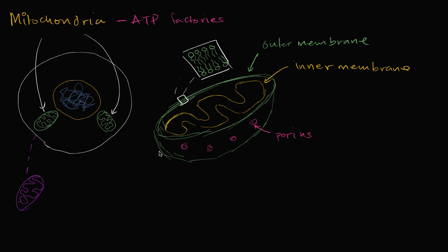These folds have a name. If you're talking about one of these folds, you're talking about a crista. But if you're talking about more than one of them, you would call that cristae. These are just folds in the inner membrane. The inner membrane is also a phospholipid bilayer.